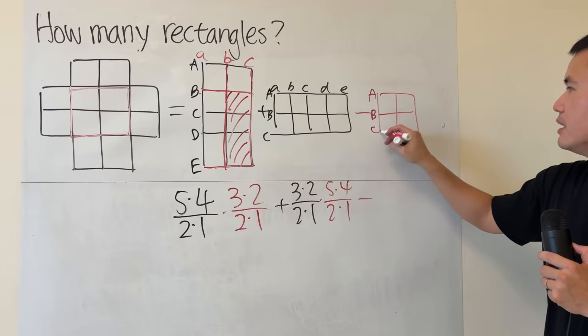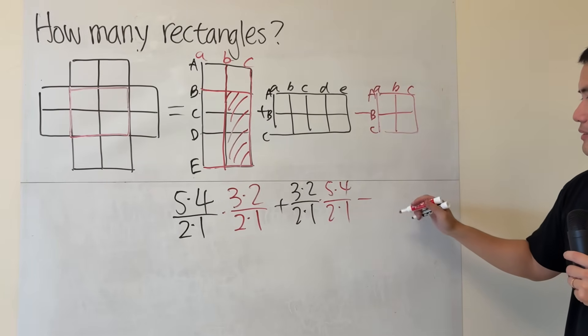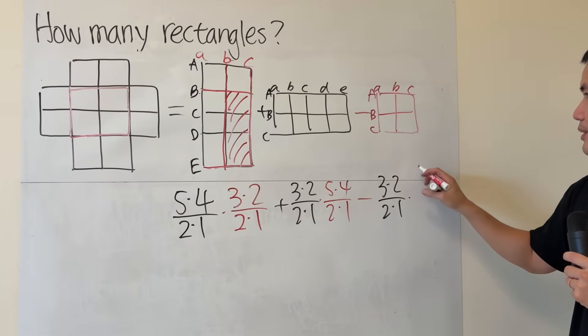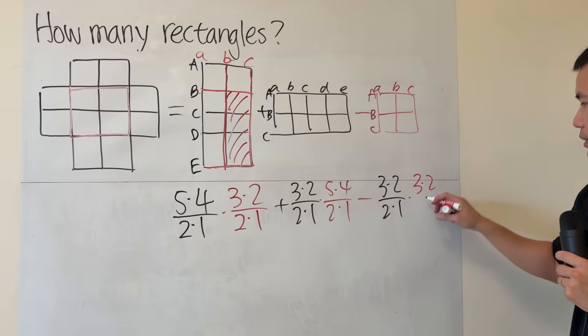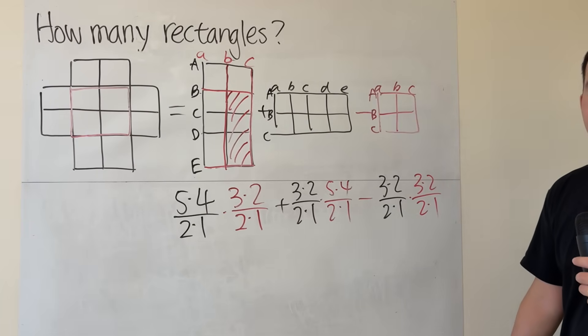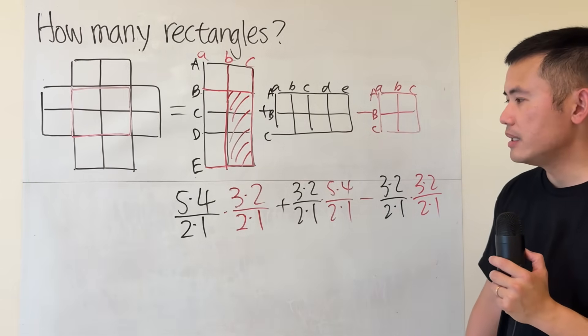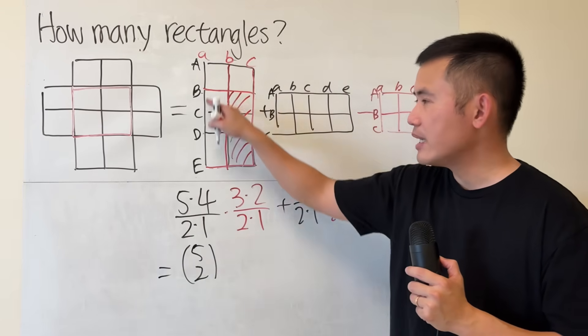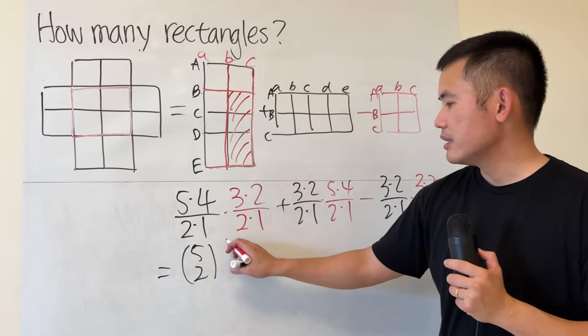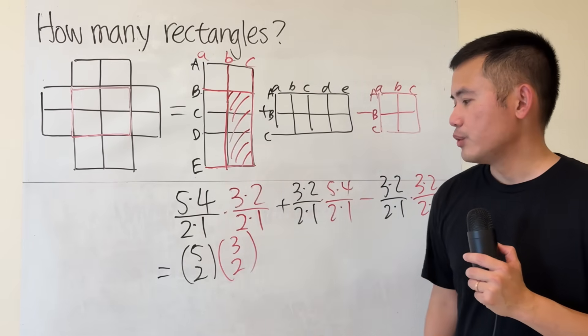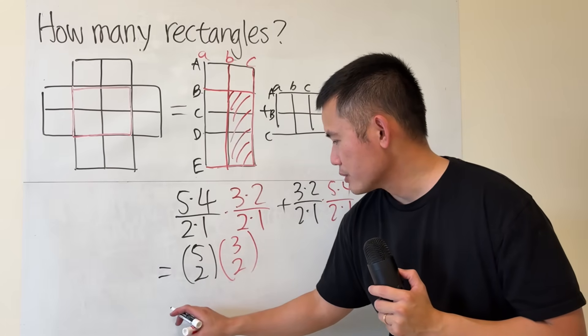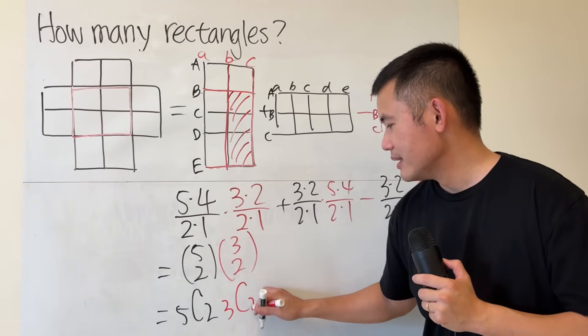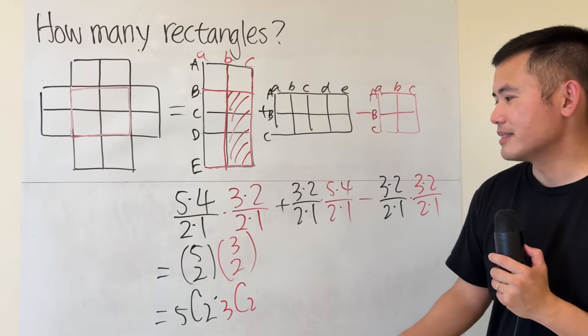So, this is A, B, C, and then A, B, C. So, all we have to do is 3 times 2 over 2 times 1 for the horizontal case. And then, it's the same thing for the vertical case. And then, for the people who are more familiar with combinatorics ideas, this right here is precisely, you can write it as 5 choose 2 because you have 5 choices and you have to select 2. And then, this right here is 3 choose 2. And this right here, or, you can also put it as 5 C 2. And then, 3 C 2. The C just means combinatorics, where you can think about it as you choose.